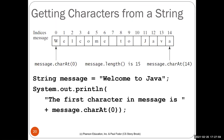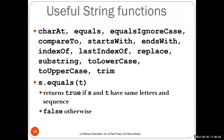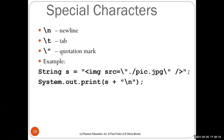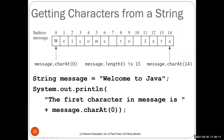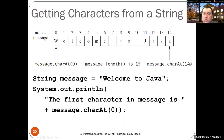A student asked about syntax: yes, it's dot-notation — message.charAt(0), message.length(), message.charAt(14), and so on. For example, with message = "Welcome to Java" (length 15), message.charAt(0) is 'W', message.charAt(14) is 'a' (the last character, at index length-1). To read a string from the console, use nextLine() for the entire line including spaces, or next() which reads up to the first whitespace.